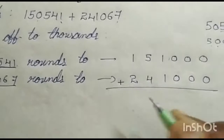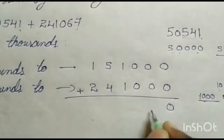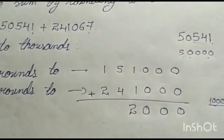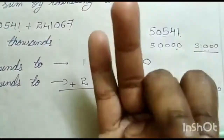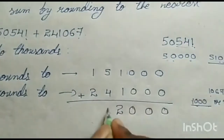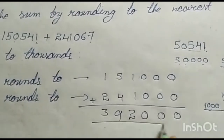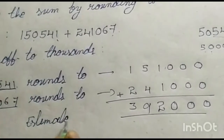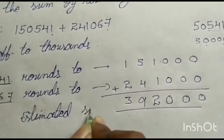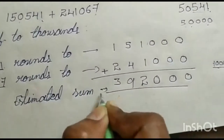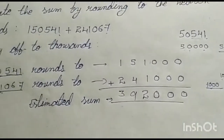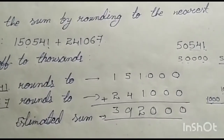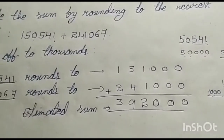Now let us do the addition. 0 plus 0 is 0, 0 plus 0 is 0, 0 plus 0 is 0, 1 plus 1 is 2, 5 plus 4 is 9, and 2 plus 1 is 3. This is the estimated sum. Like this, we write the nearest thousands numbers and do the addition. The sixth question is also nearest to the thousands — do that sum on your own in your notebook.